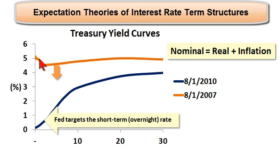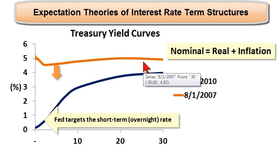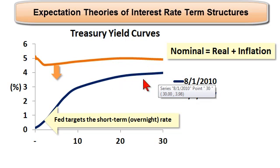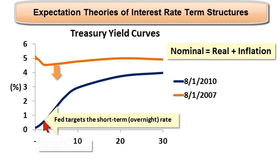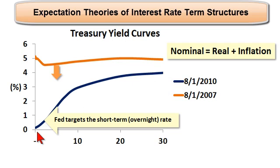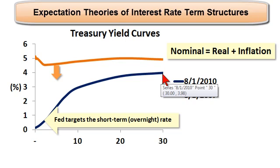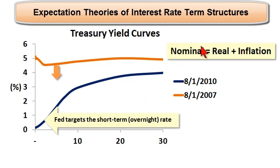In orange here, this is from three years ago, and we can see it was roughly flat at about 5%. In blue, this is from exactly two days ago. We've got an upward sloping treasury yield curve, although the rates are all lower. In fact, the nominal rate here is almost zero, and the 30-year rate is less than 4%. So two things about this typical treasury yield curve that's plotted and oftentimes discussed.